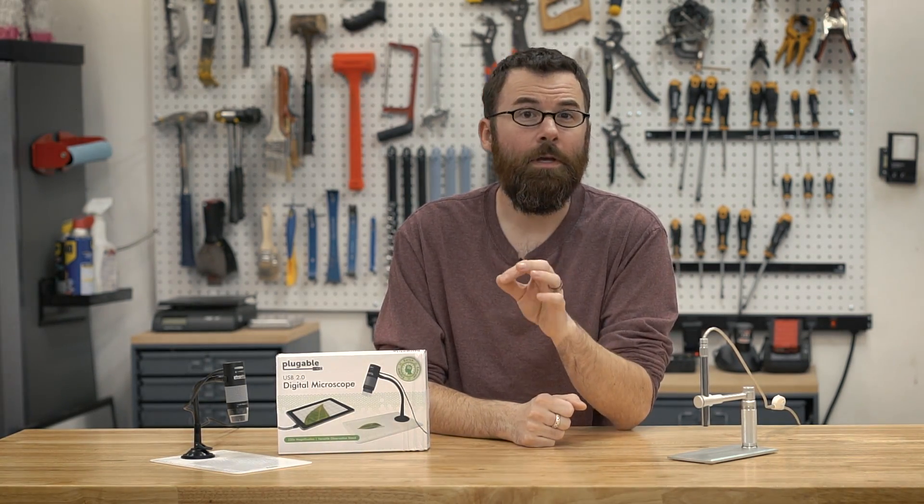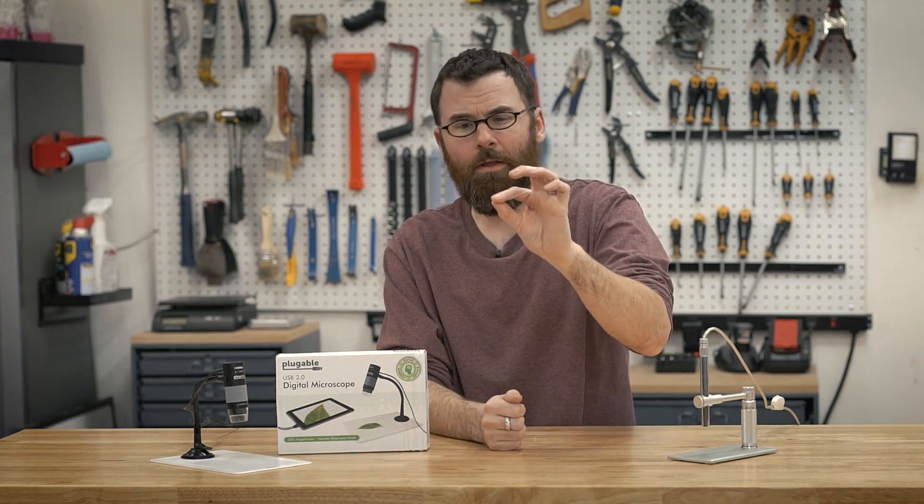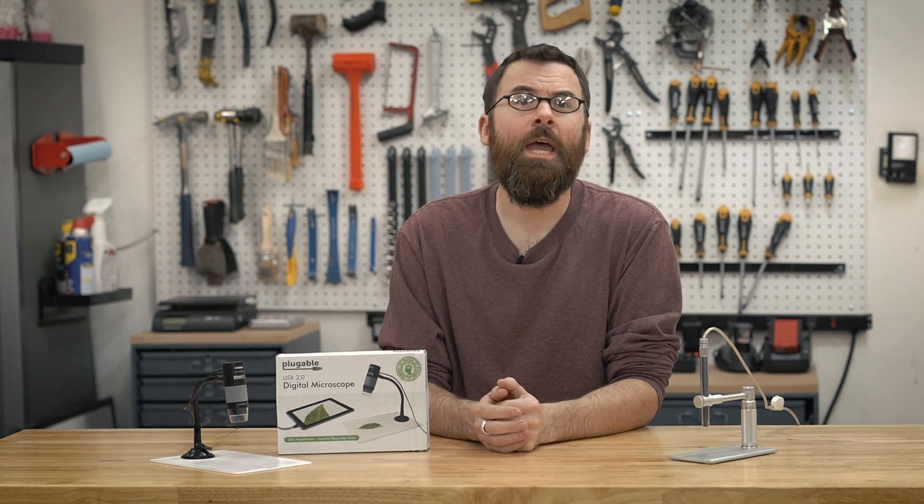You can look at end mills to see if you have chip flutes or what kind of wear is on the flutes, and also surface mount soldering. I've done some surface mount soldering lately and it'd be nice to zoom in and look at things close up. So I picked up one of these really inexpensive USB microscopes off of Amazon.